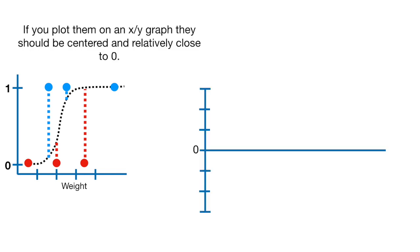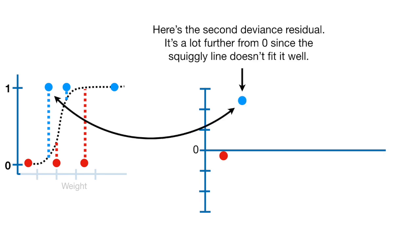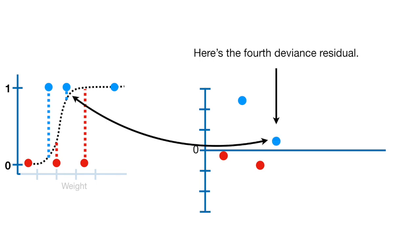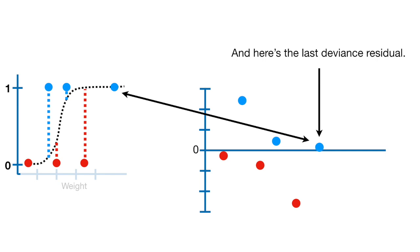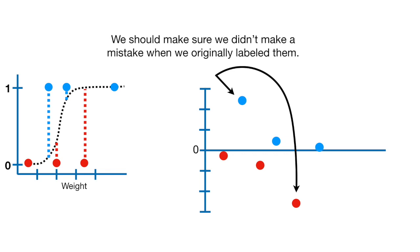If you plot them on an x-y graph, they should be centered and relatively close to zero. The first deviance residual is close to zero because the squiggly line is very close to it. The second deviance residual is a lot further from zero since the squiggly line doesn't fit it well. Walking through the remaining residuals, the second and fifth deviance residuals are relatively far from zero and may be outliers. We should make sure we didn't make a mistake when we originally labeled them.